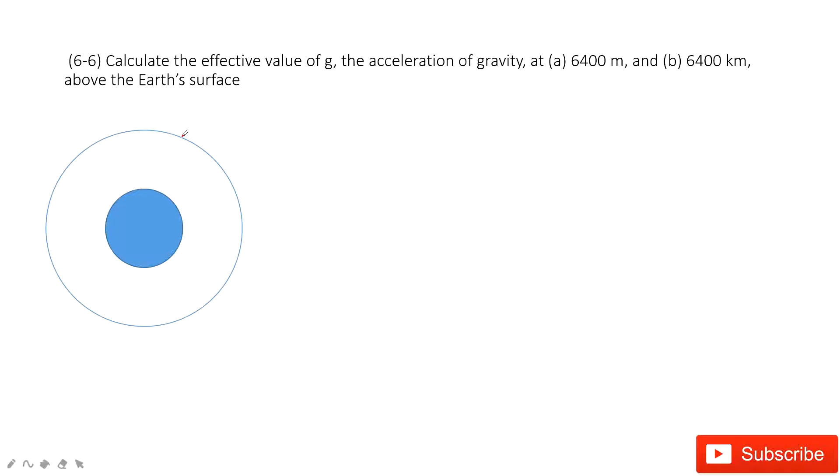We can assume the object is there, a distance above the Earth's surface. The radius r should be the radius of the Earth plus h, the height, the distance above the Earth in two cases.